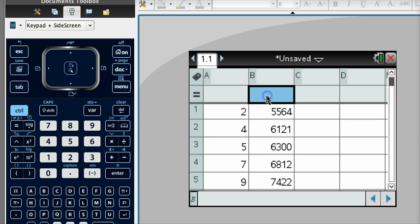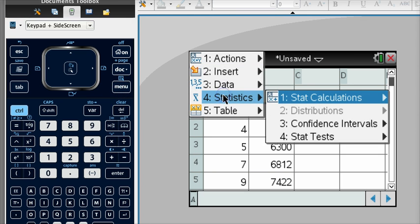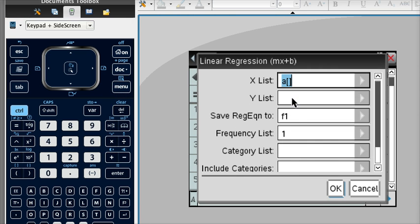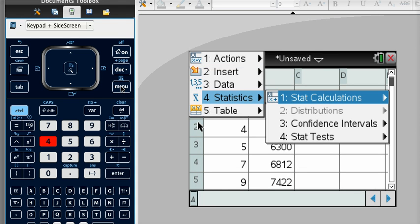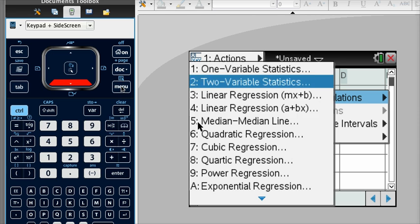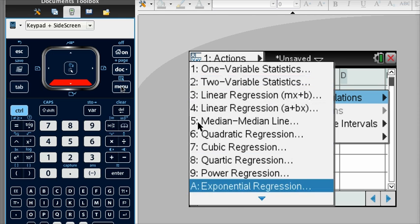Now that you have this, remember how I showed you earlier to do statistics? So we're going to go to menu, statistics, stat calculation. Oops, I did that too fast. Menu, statistics, stat calculation. And I want to do an exponential regression, choice letter A. I click on that.